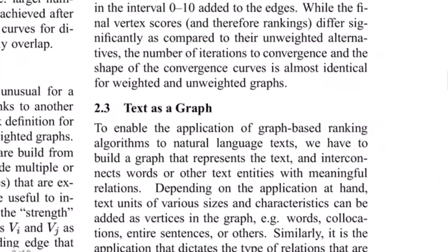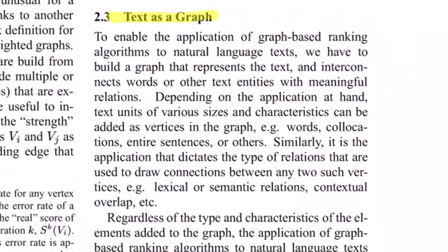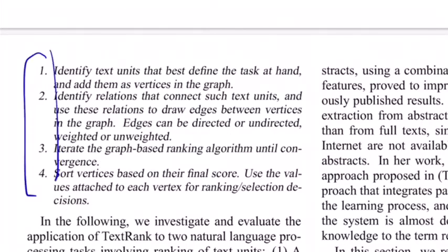They follow four rules to convert text as a node in a graph and then apply ranking mechanisms. First, identify the text unit that best defines the task at hand and add them as vertices. In this paper, they talk about two use cases: keyword extraction and sentence ranking or extractive summarization. For keywords, you have phrases or unigrams as nodes. For summarization, you have entire sentences as nodes. Then identify relations that connect such text units and use these relations to draw edges between vertices.